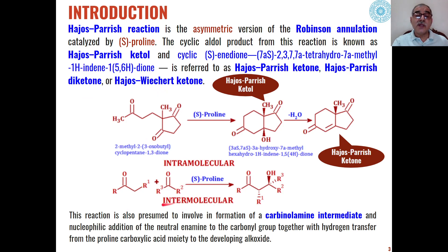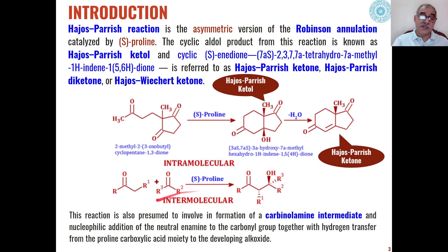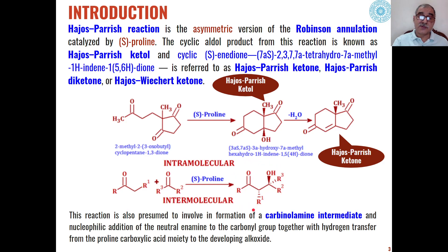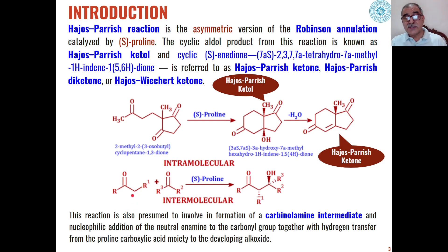Intermolecularly, we can have asymmetric aldol condensation products catalyzed by S-proline, when two different carbonyl compounds condense with each other to give us beta-hydroxy ketones as the product through asymmetric aldol condensation. Here also, one of the ketones will act as the carbanion because of the removal of acidic protons by S-proline.